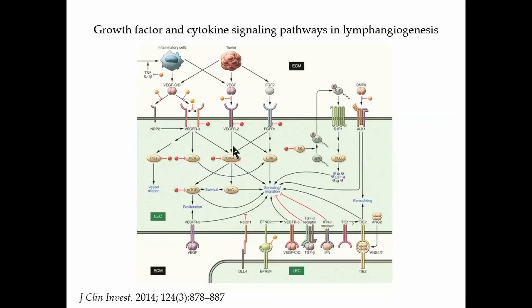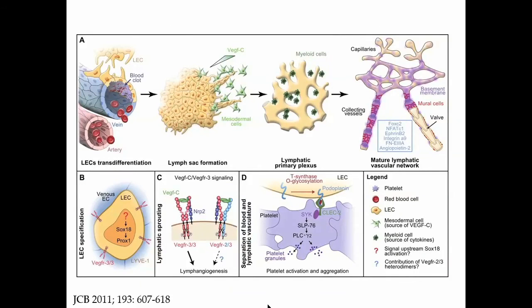Without getting into the details of this cascade, there are numerous ligand-receptor dyads and numerous pathways of both stimulation — shown in blue — and of inhibition — shown in red. This is a tightly regulated system and, like so many aspects of biology, there is a yin-yang component to it. All of these forces need to be in balance in order to have normal vascular development, which we believe will be disordered when we're dealing with lymphatic vascular malformations.